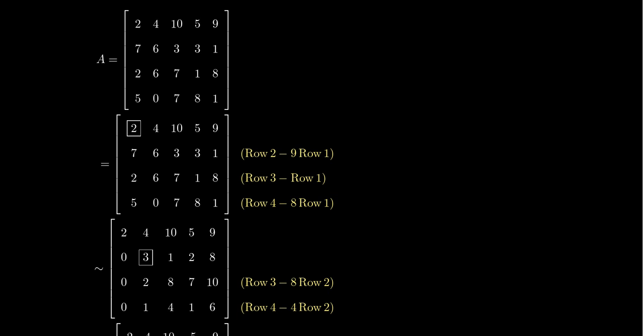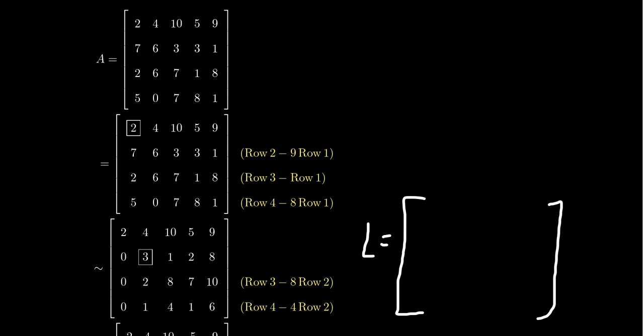On the left we'll see the sequence of reduction from A to U. U just has to be any echelon form, so we'll take the first echelon form as we reduce A. L is this four by four matrix — we know it's unit lower triangular, so we have ones along the diagonals and zeros above the diagonal. The entries below the diagonal are what we'll determine through our row reduction. This right here is just our original matrix A unaffected.